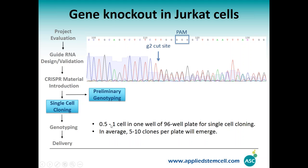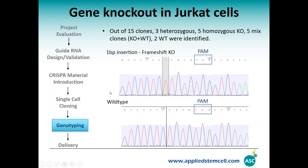For single cell cloning, we usually put 0.5 to 1 cell per well of a 96-well plate. For Jurkat cells at this density, we get about 5 to 10 clones per 96-well plate — so if you would like to pick 100 clones total, you probably need to plate 10 plates. During single cell cloning some clones grow fast and some grow slow. We picked the first 15 fast-growing clones and found three heterozygous, five homozygous, and five mixed clones — meaning they were not from single cells. About 13 out of 15 efficiencies included knockout events. The final deliverable shows a 1T insertion right at the cutting site.